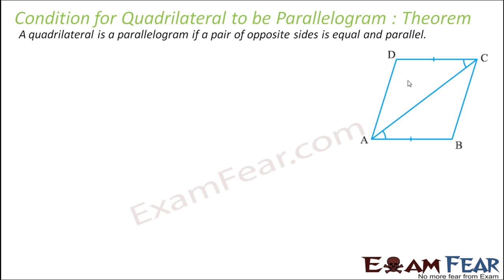We have seen so many conditions for a quadrilateral to be a parallelogram. For example, if the diagonals bisect each other in a given quadrilateral, it is a parallelogram. If the opposite pairs of sides are equal, or if opposite pairs of sides are parallel, or if each pair of opposite angles is equal — it is a parallelogram. Let's see a few more conditions for a quadrilateral to be a parallelogram.